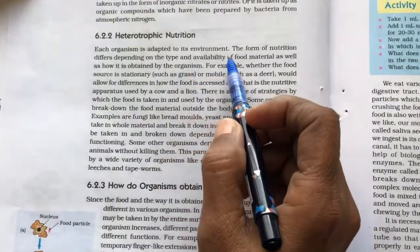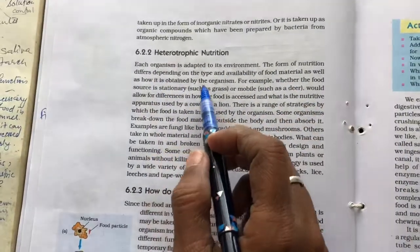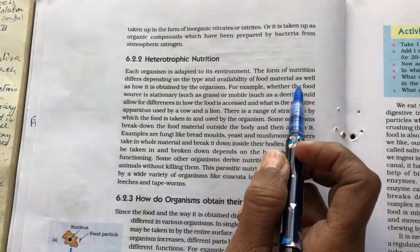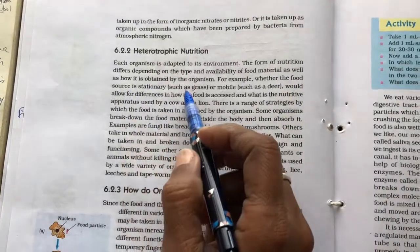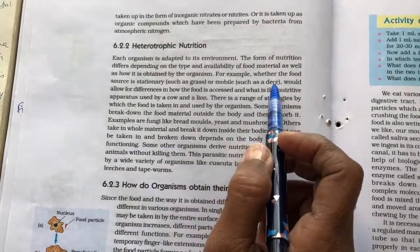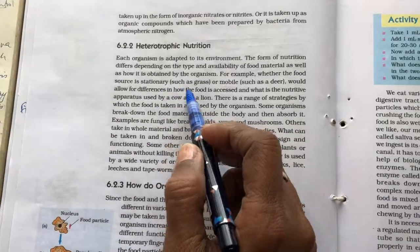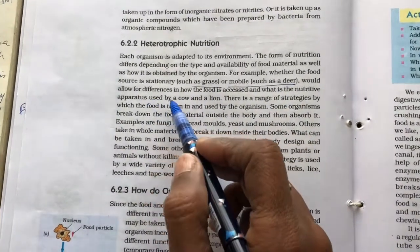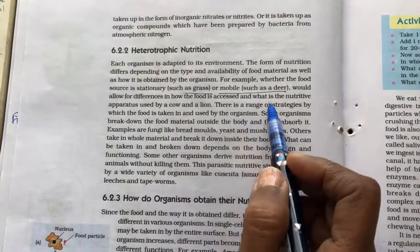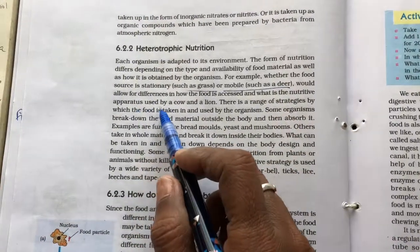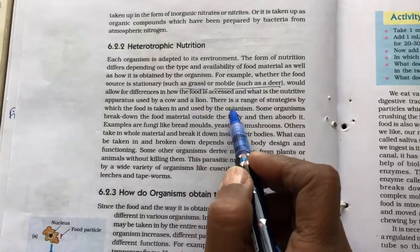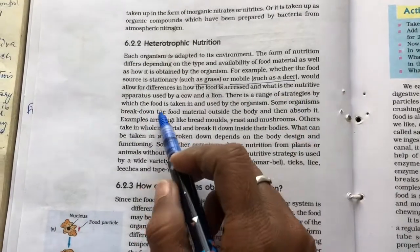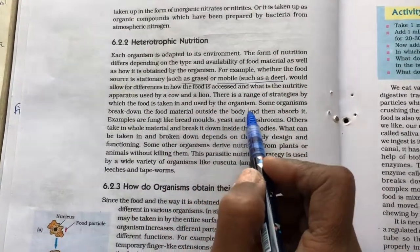Each organism is adapted to its environment. The form of nutrition differs depending on the type and availability of food material as well as how it is obtained by the organism. For example, whether the food source is stationary such as grass or mobile such as deer would allow for differences in how the food is accessed and what is the nutritive apparatus used by a cow and a lion. There is a range of strategies by which the food is taken in and used by the organism.